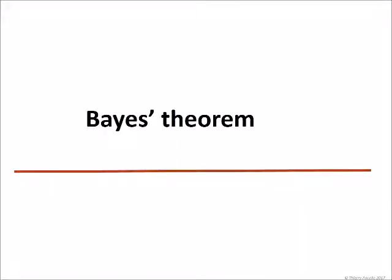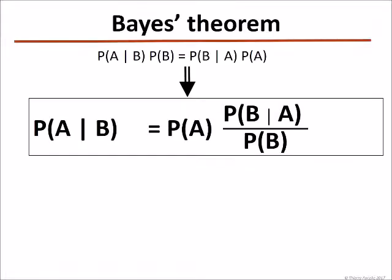And now you're ready to appreciate this Bayes' theorem, which derives from the formula we just found. P of A given B is equal to the ratio of P of A divided by P of B multiplied by P of B given A.